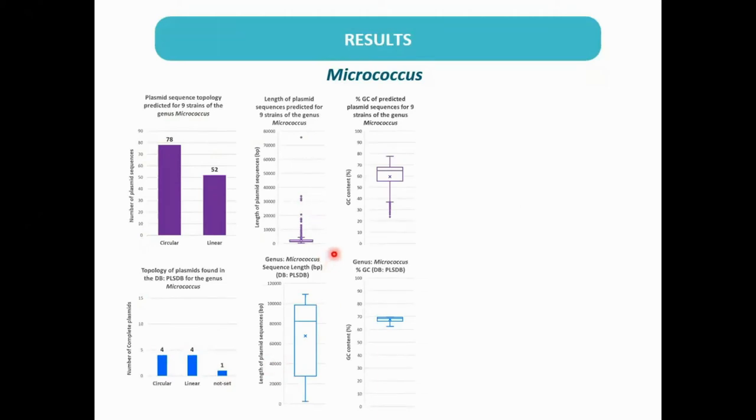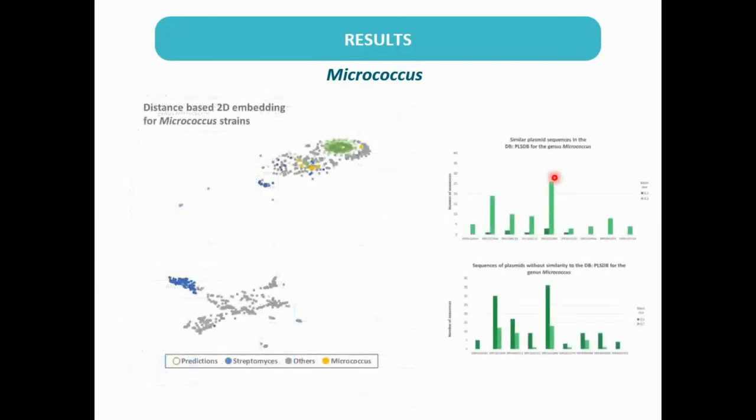In this case, we also observed that the average length of the predicted Micrococcus sequences was less than those present in the database, and the GC content was similar. We also found similar and dissimilar sequences.